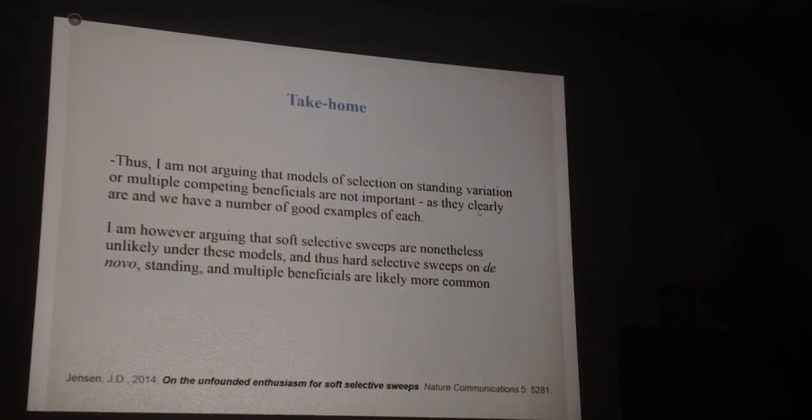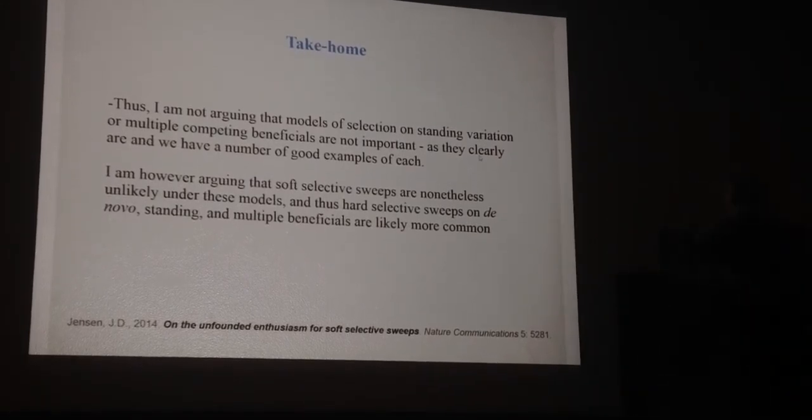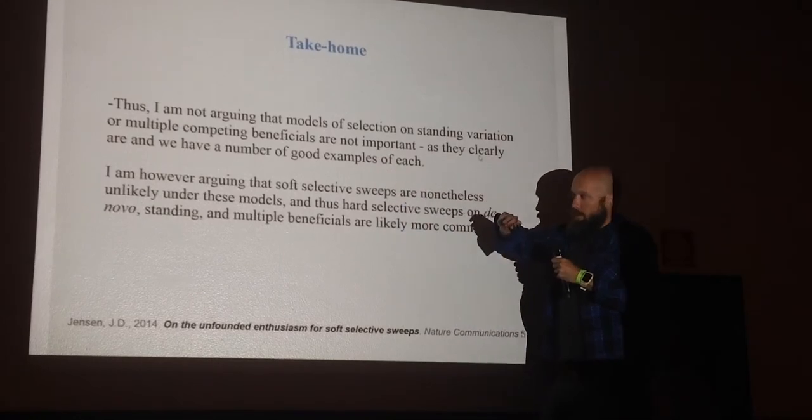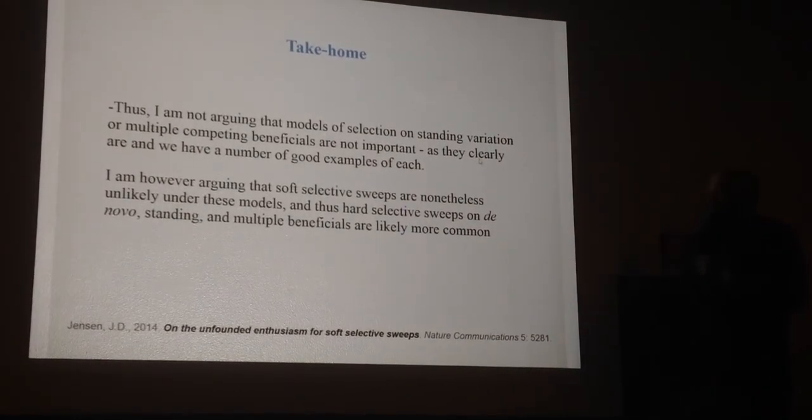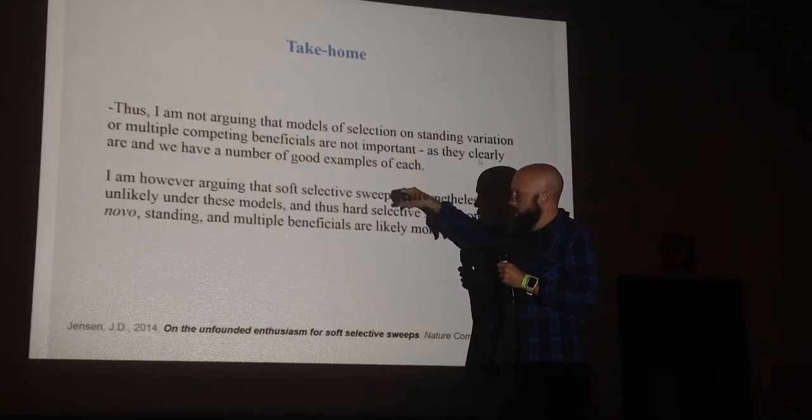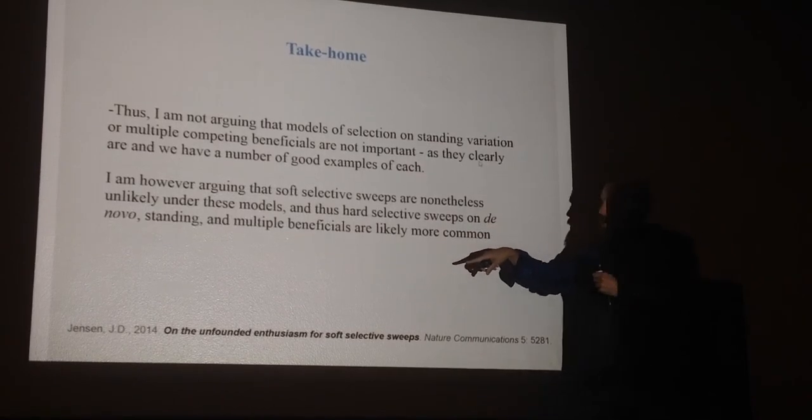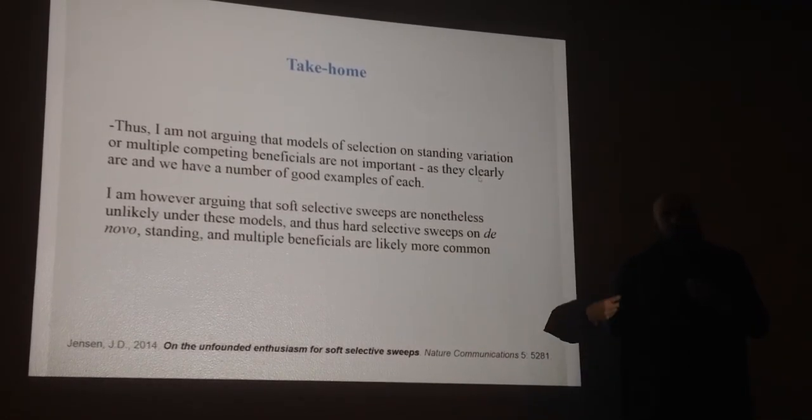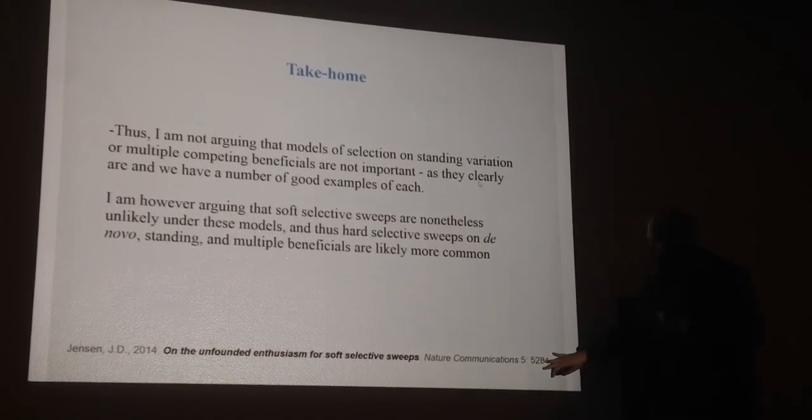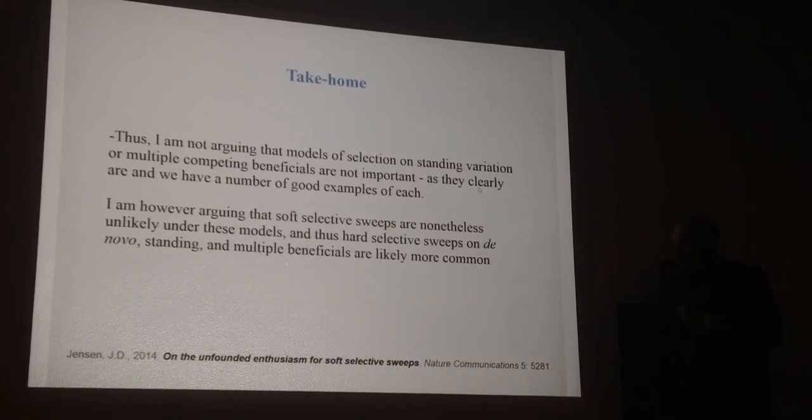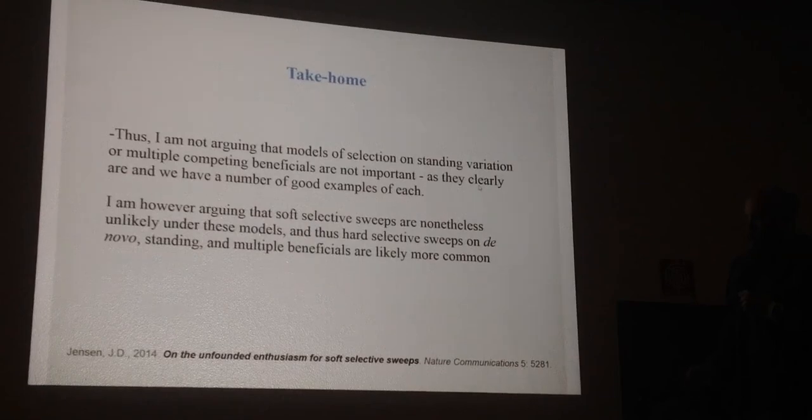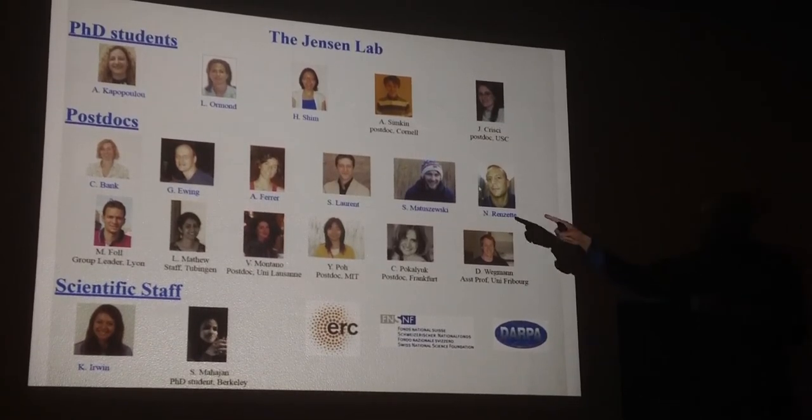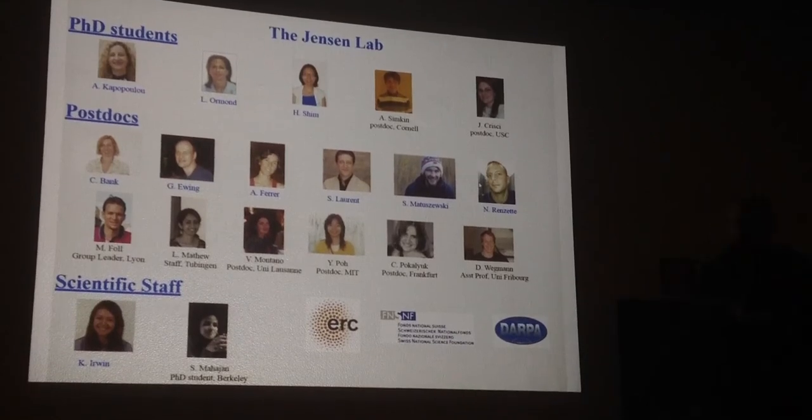The take home here to me is I'm not arguing that models of selection on standing variation aren't important, because we have many examples in literature where that's exactly what happened, I think. Or that models of multiple competing beneficials aren't important—we have many examples of those as well. What I am arguing is that soft selective sweep statistics are unlikely under these models. Whether you're talking about selection on de novo mutations or standing variation or multiple competing beneficials, there's a very large parameter space where all three of these models will result in a hard sweep rather than a soft sweep. Most of the points here and many more illustrative data examples than I could show in 12 minutes are in this review commentary I wrote last year. On that I'd just like to thank my lab members for feedback on this work as I was thinking about and writing it. Current members in blue and former members in black with their current locations. Thank you very much.